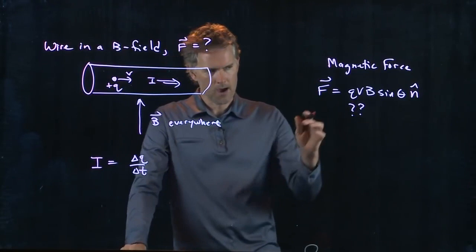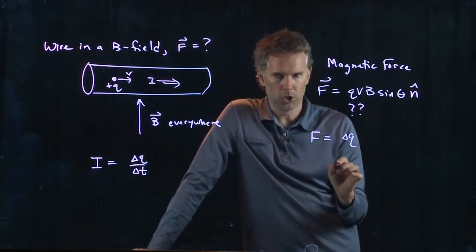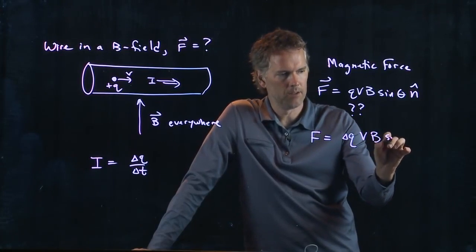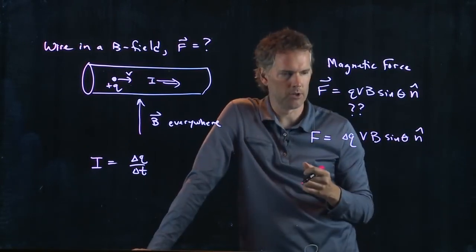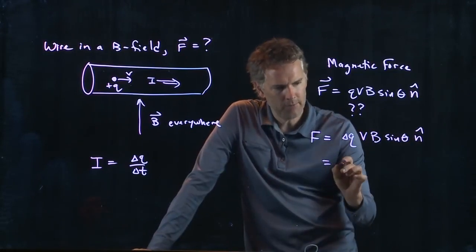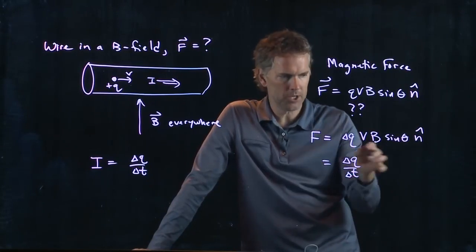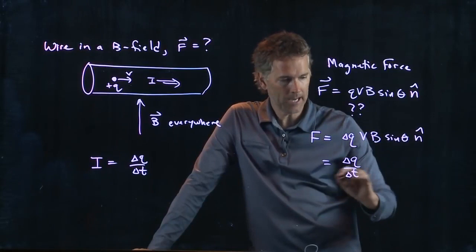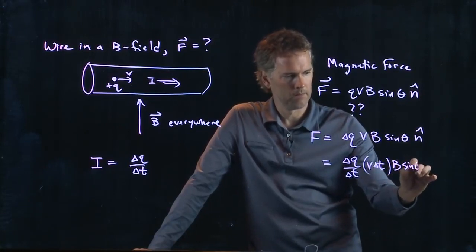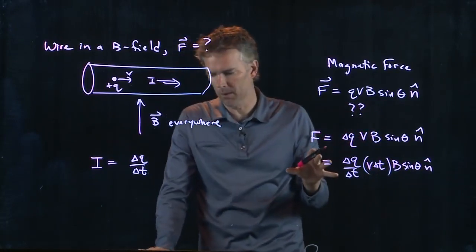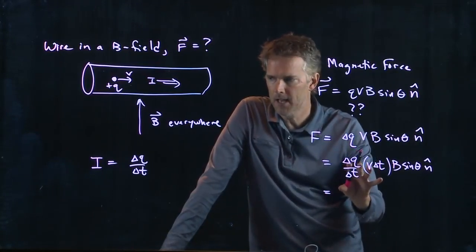So F we could really say is the following. Let's just call this thing delta Q VB sine theta and hat. The delta Q just means some amount of charge. We're going to look at some chunk of charge. But what if I divide by a delta T? I can't just divide by a delta T arbitrarily without changing the value. But if I divide by a delta T, I can multiply by a delta T and then I'll get the same thing. I haven't changed the relationship, it's the exact same relationship. But now we can write delta Q over delta T as I.